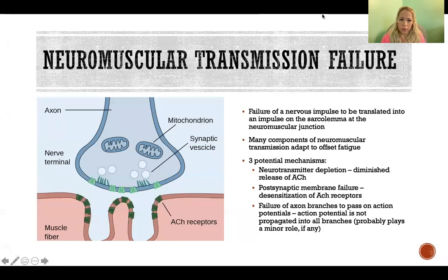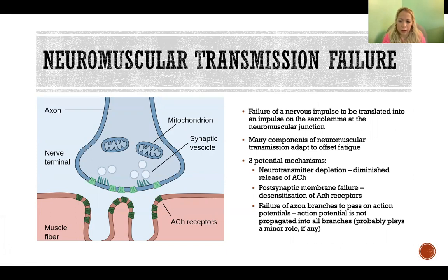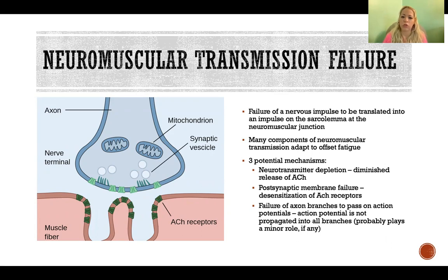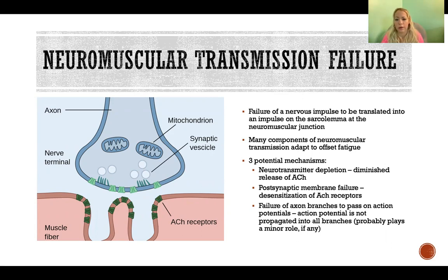Neuromuscular transmission failure refers to the failure of nervous impulses to be translated into an impulse on the sarcolemma at the neuromuscular junction. This occurs when an action potential coming from the motor neuron is not successfully transmitted to generate an action potential in the muscle fiber — that is what we call neuromuscular transmission failure.